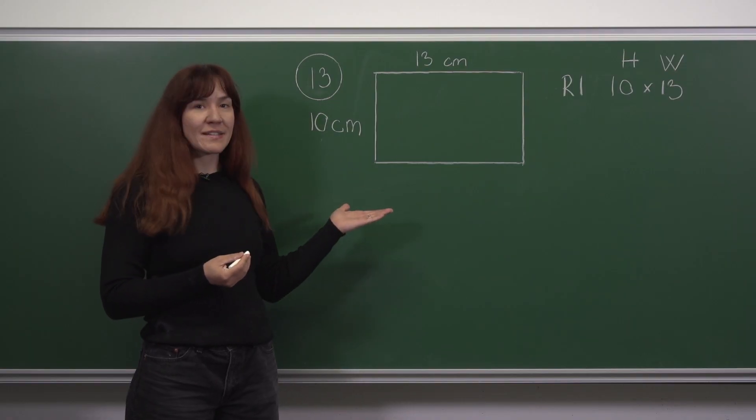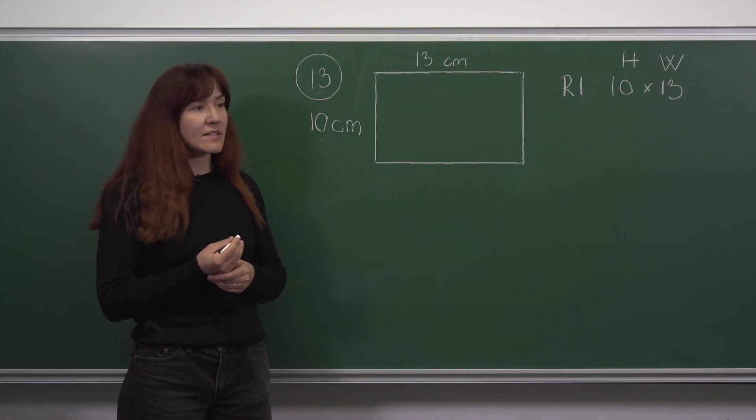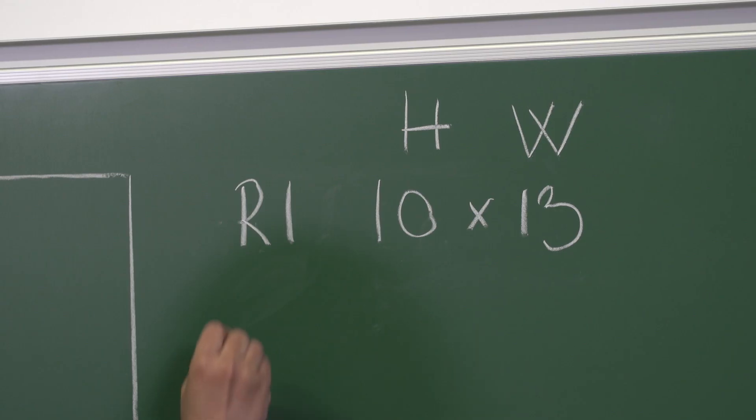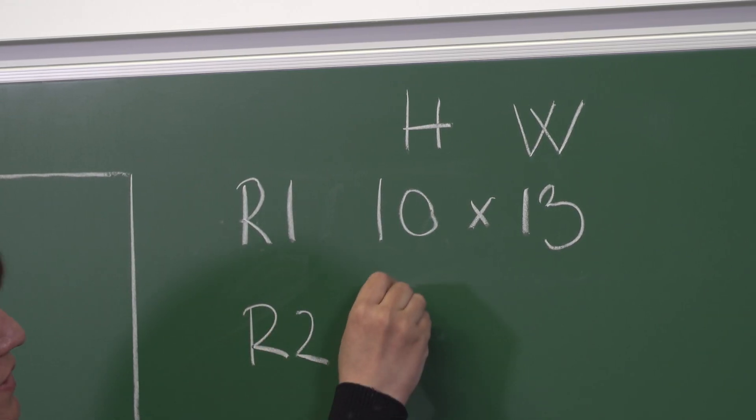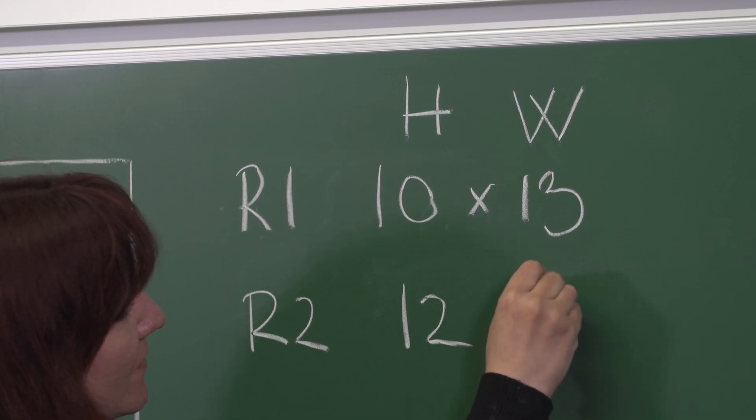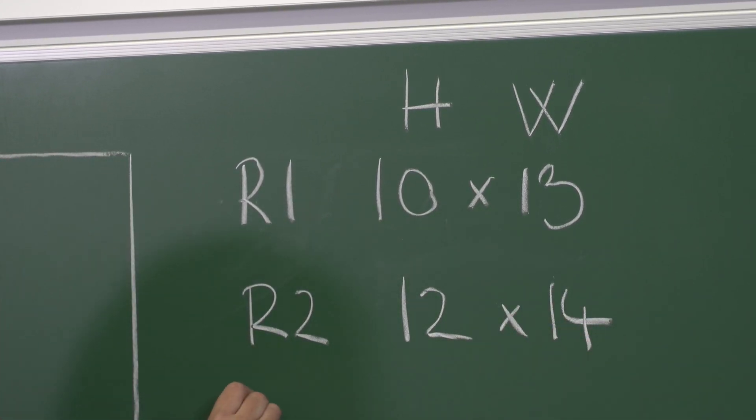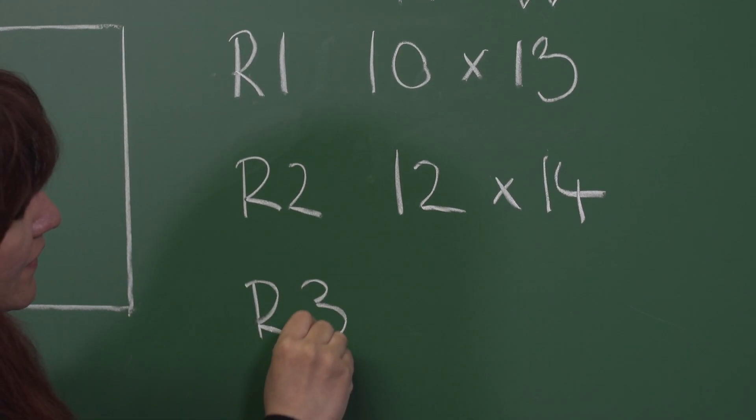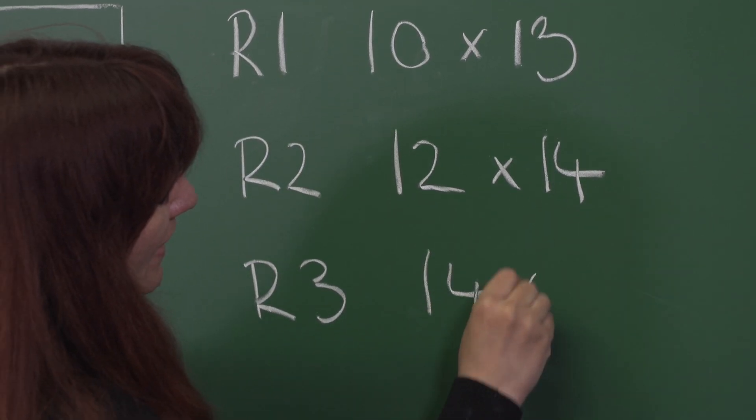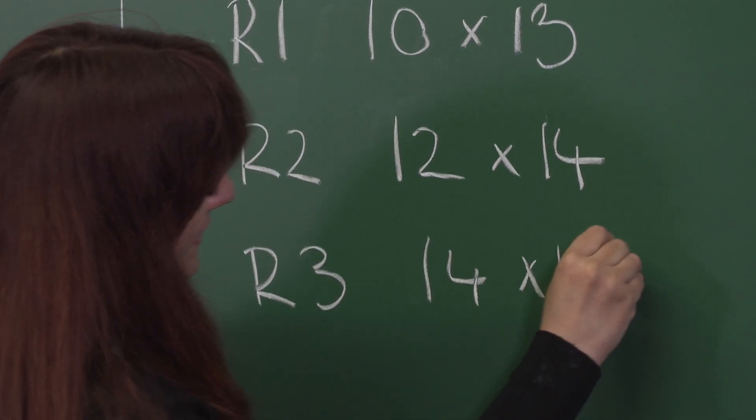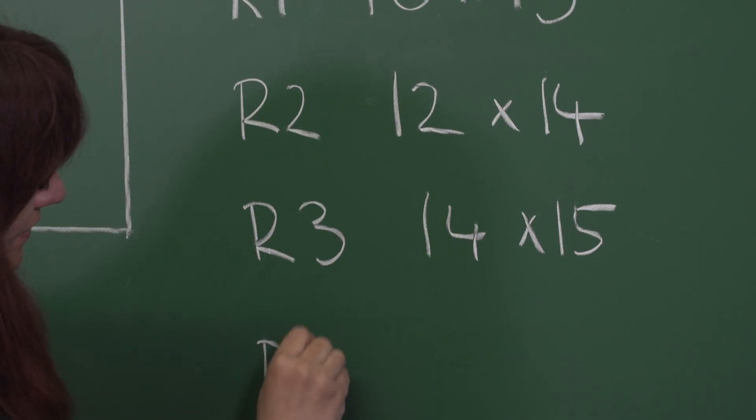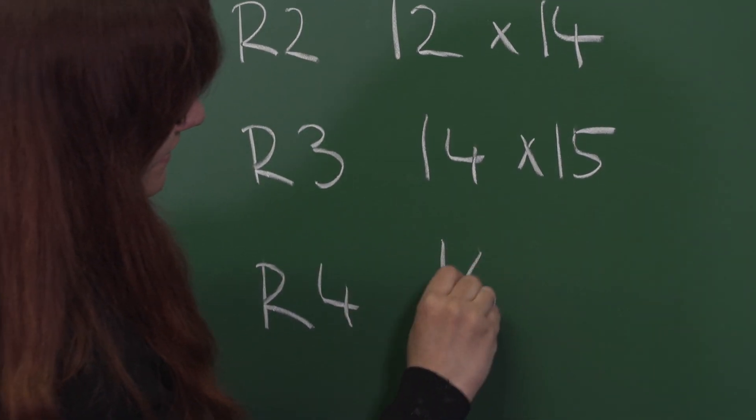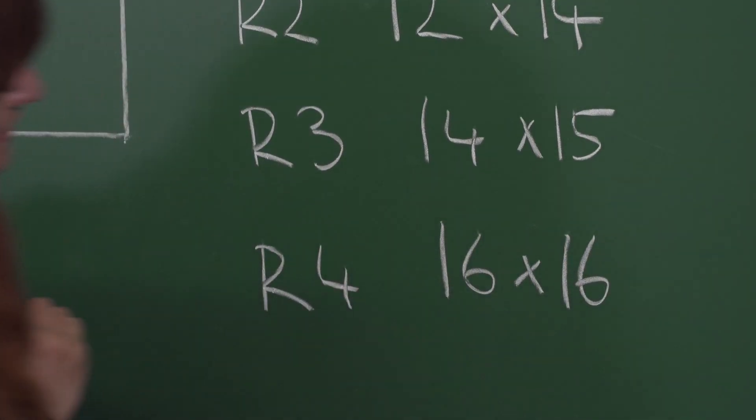We have the first rectangle here, let's list the next couple of rectangles. The second rectangle will have dimensions 12 by 14, the third one will have 14 by 15, the fourth one will have dimension 16 by 16.